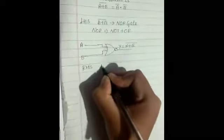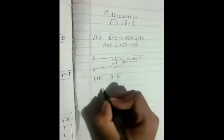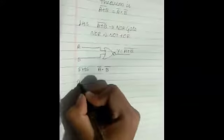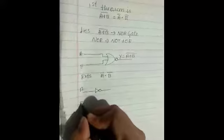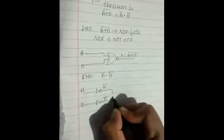The right hand side is a bar into b bar. Input a is combined with a NOT gate and input b is combined with a NOT gate, giving a bar and b bar. Both are then combined with an AND gate. Therefore, y is equal to a bar into b bar is the output.